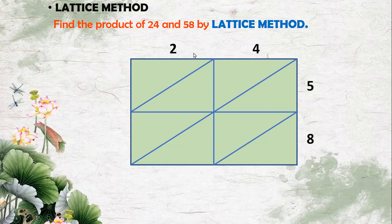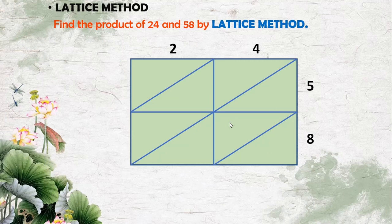After writing the numbers over the length and columns, we will start multiplying. We multiply 8 with the ones place: 8 into 4 equals 32. In 32, 2 is in the ones place so I write 2 in the lower triangle, and 3 is in the tens place so I write 3 in the upper triangle. Next, 8 into 2 equals 16 — 6 goes in the lower triangle and 1 goes in the upper triangle.